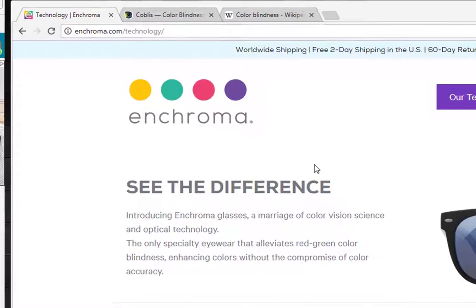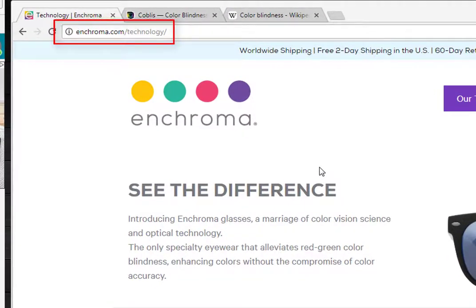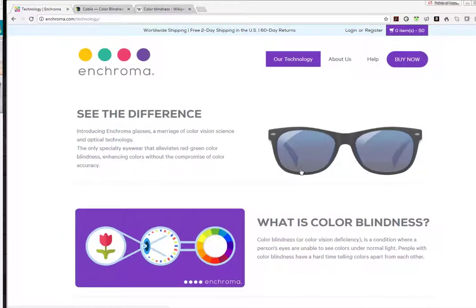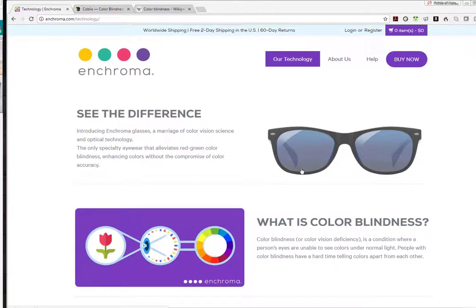If you know anyone who has red-green colorblindness, have them look at Enchroma.com. This company has come up with a technology that they build into glasses that help people with that type of colorblindness to see colors for the first time.